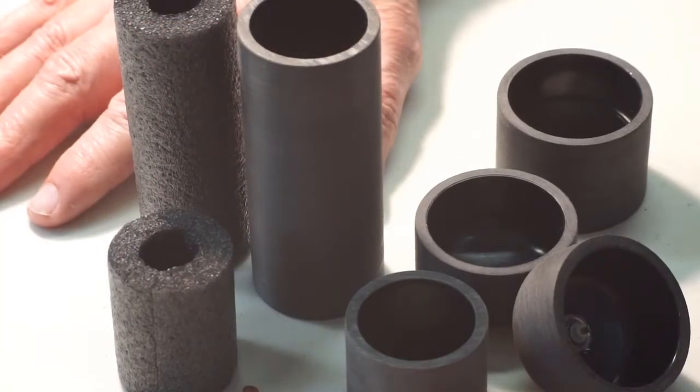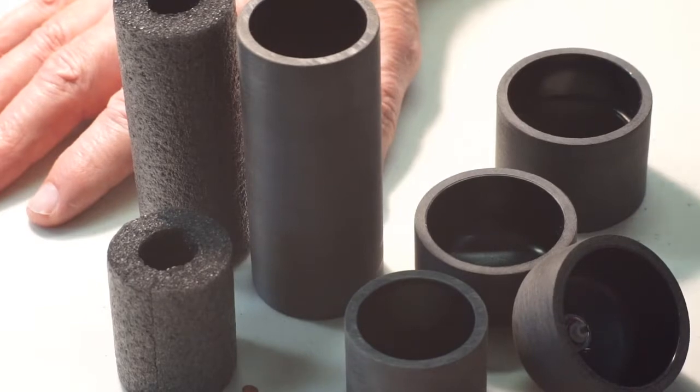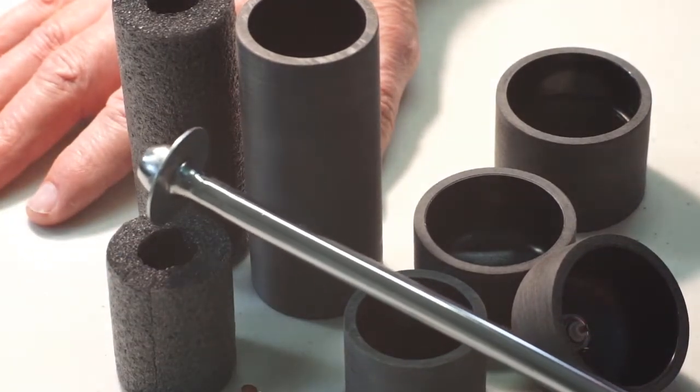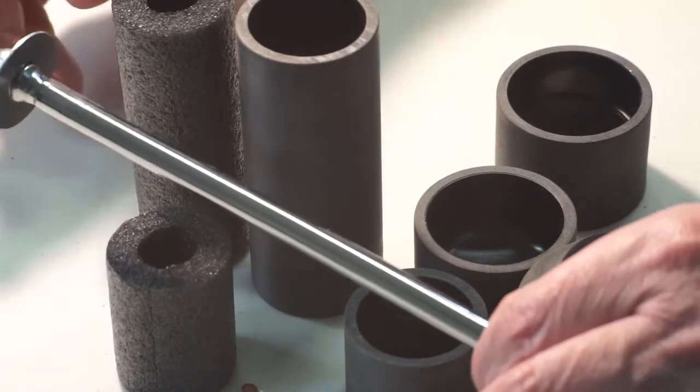This is another one of my plumber meets electrician kind of builds. The first piece I want to show you is this faucet supply tube. It's a 3/8 inch diameter.